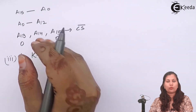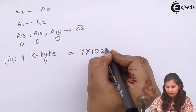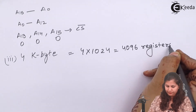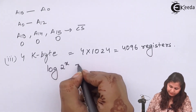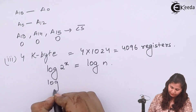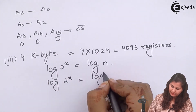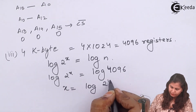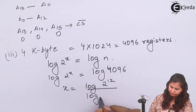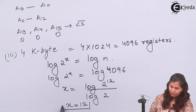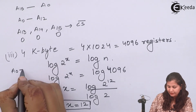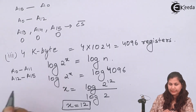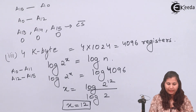For the third part, 4 kilobyte memory: 1 kilobyte equals 1024 bytes, so 4 × 1024 = 4096 registers. 4096 is 2 to the power 12, so x = log(2^12) / log(2) = 12. Therefore, 12 address lines are required. Lines A0 to A11 are used to address this memory, and A12 to A15 are connected to the chip select line.